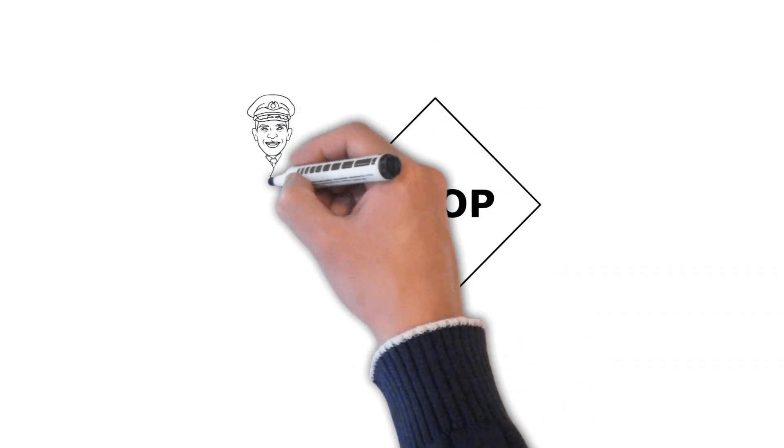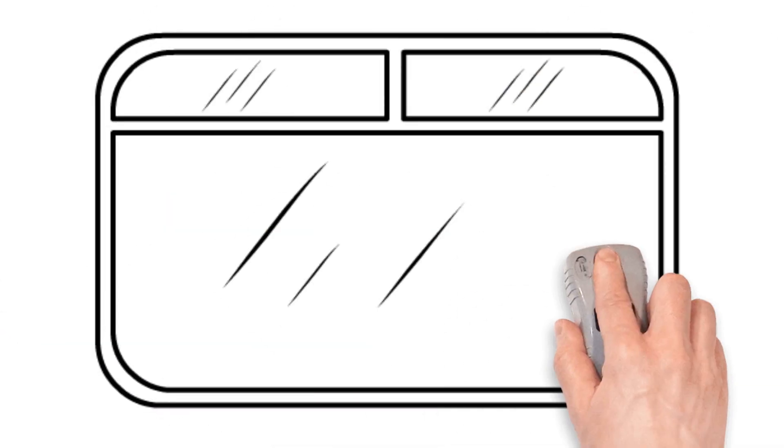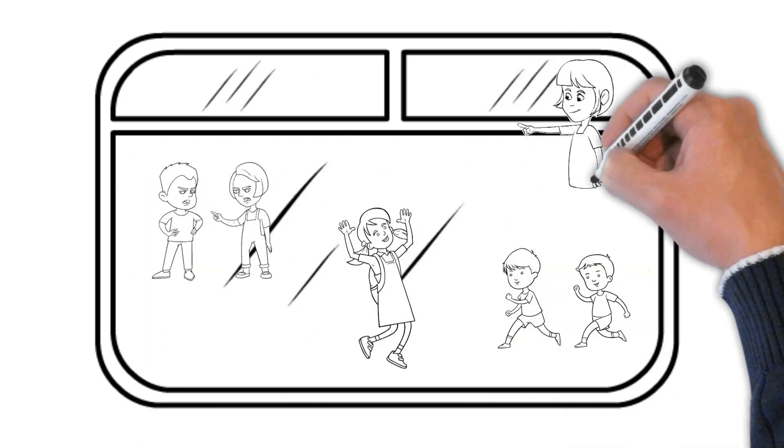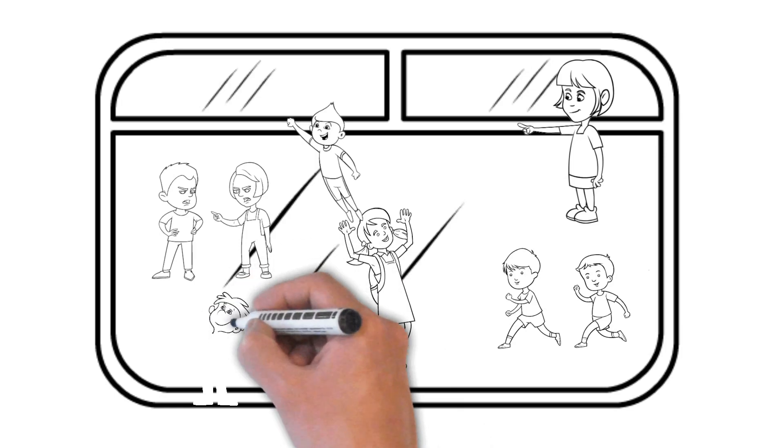One more stop. The bus driver blurted it out. All of the kids who were on that stop went inside the bus and picked their seats. Now the bus was filled with kids screaming and talking. It was very chaotic.